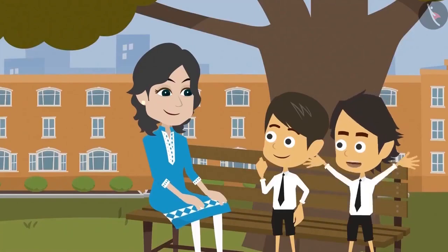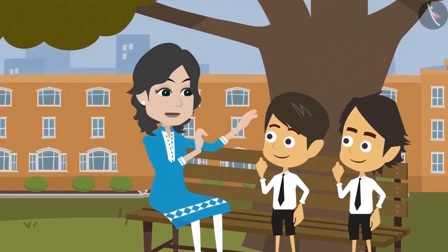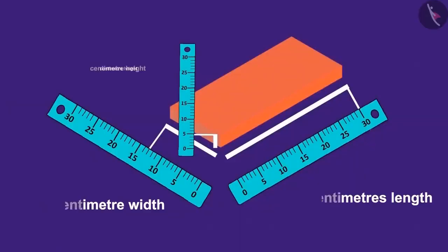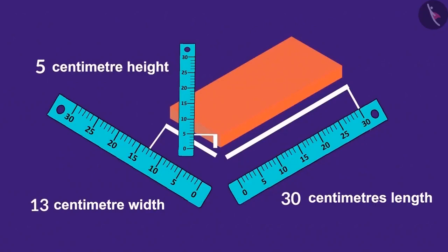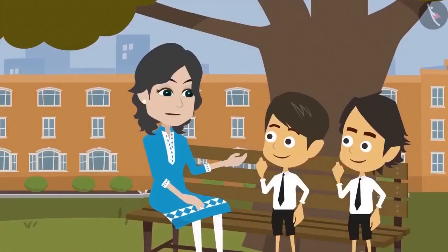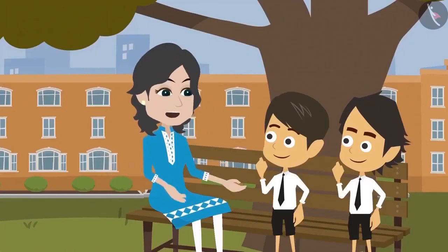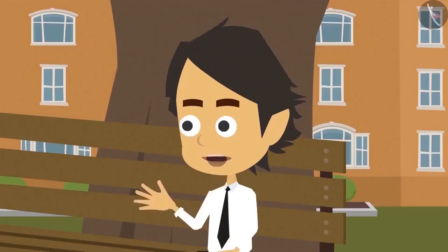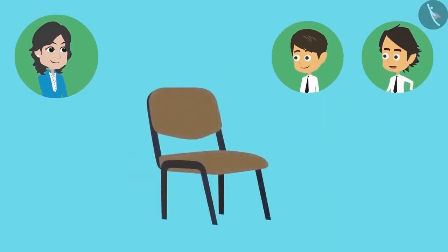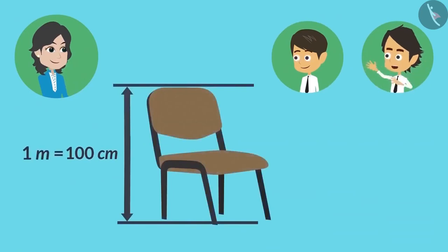The boys ask why meter is needed if centimeter already exists. The coach explains that centimeter is very small and used for short lengths, while meter is used for bigger lengths. Objects with length more than 100 centimeters are measured in meters, because 1 meter equals 100 centimeters. If an object is 100 centimeters long, we can also say it is 1 meter long.